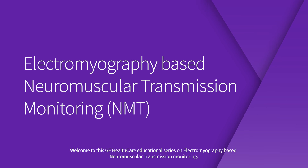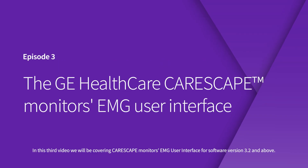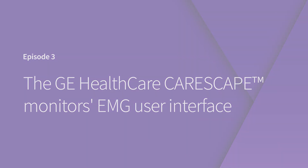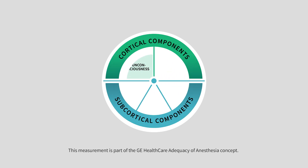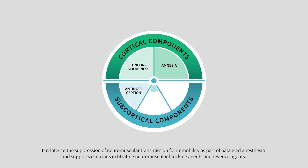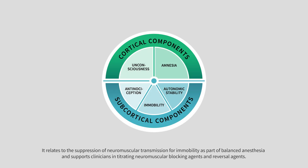Welcome to this GE Healthcare educational series on electromyography-based neuromuscular transmission monitoring. In this third video, we will be covering CareScape Monitor's EMG user interface for software version 3.2 and above. This measurement is part of the GE Healthcare Adequacy of Anesthesia concept. It relates to the suppression of neuromuscular transmission for immobility as part of balanced anesthesia, and supports clinicians in titrating neuromuscular blocking agents and reversal agents.